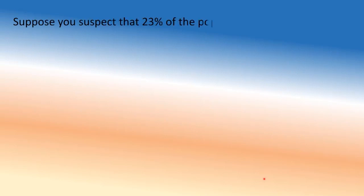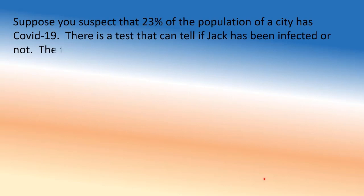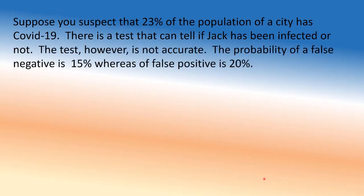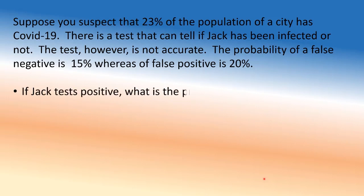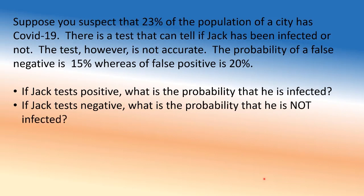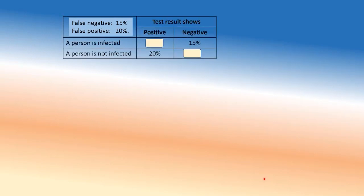The next problem is about false positives and false negatives, typical in medical testing. In a town, 23% of the population is infected with COVID-19. There's a test that can tell you whether you're infected or not, but the problem is it's not perfectly accurate. If Jack tests positive, what's the probability he is actually infected? False positive means a person who is NOT infected tests positive — there's a 20% chance of that. False negative means an infected person tests negative — that's 15%.